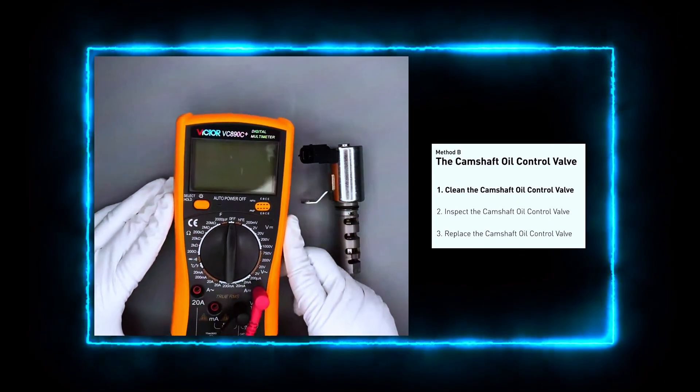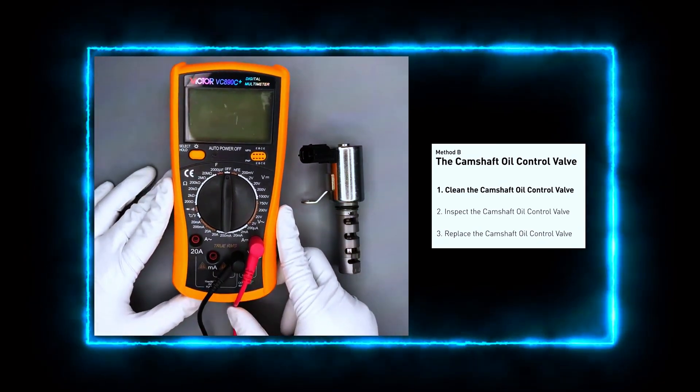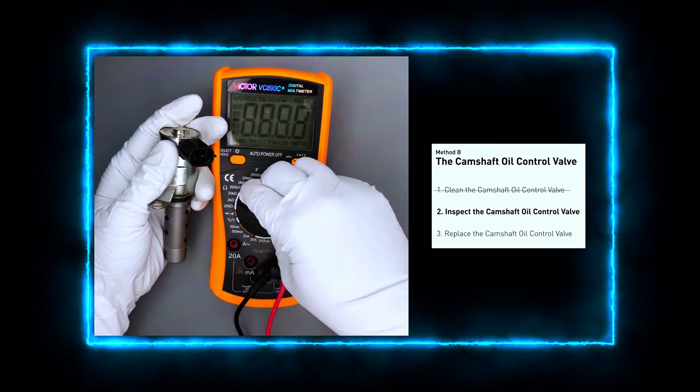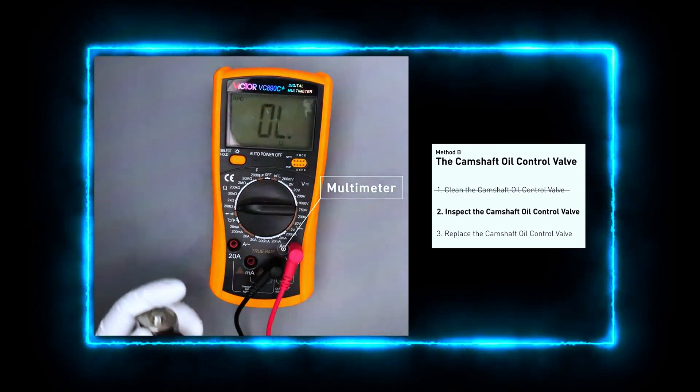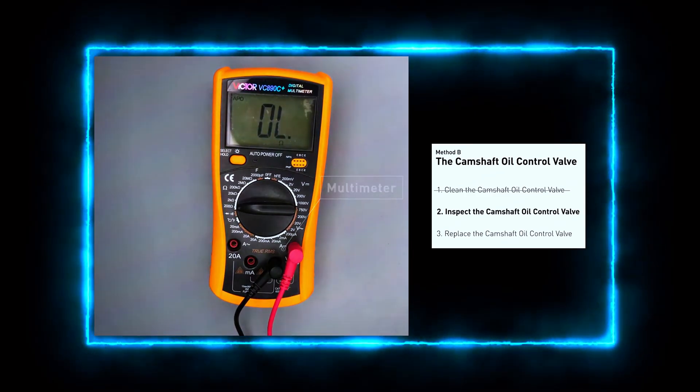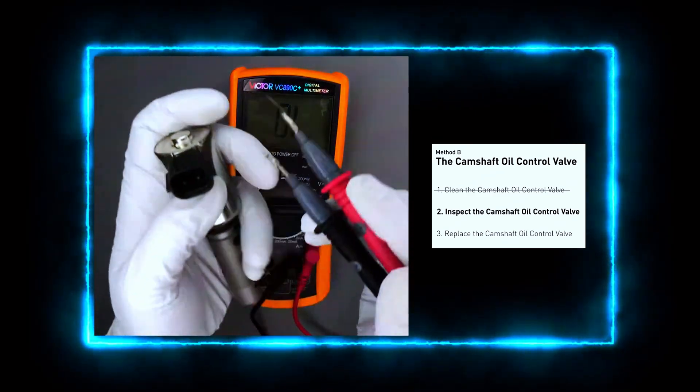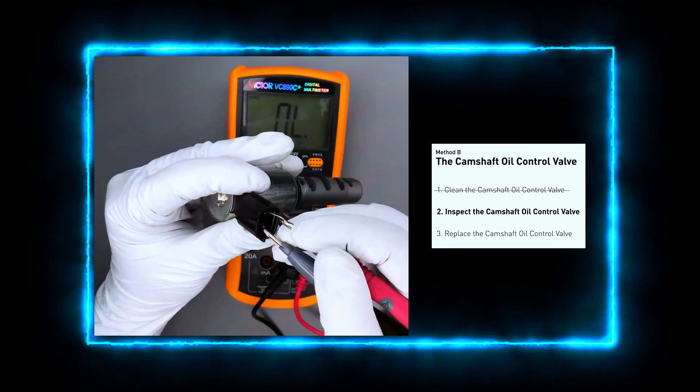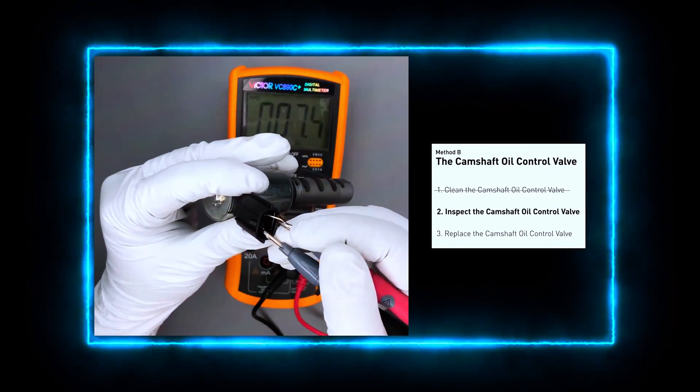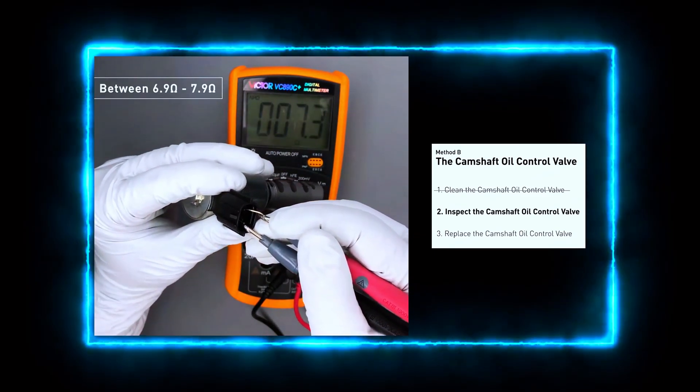If you want to test the valve before reinstallation, use a multimeter to check the resistance across the valve's electrical terminals. The resistance should be within the manufacturer's specifications, usually between 6 to 12 ohms. If the reading is off, it's time to replace the valve.